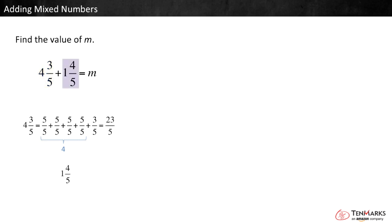1 and 4 fifths is the same as 5 fifths plus 4 fifths. Or, 9 fifths. 23 fifths plus 9 fifths equals 32 fifths. That is the sum.